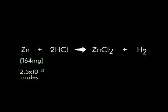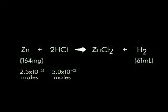When 2.5 times 10 to the negative third moles of zinc is reacted with exactly twice as many moles of hydrochloric acid, the metal will react with the acid to yield both zinc chloride and 61 milliliters of hydrogen gas.